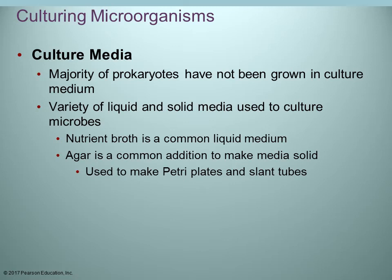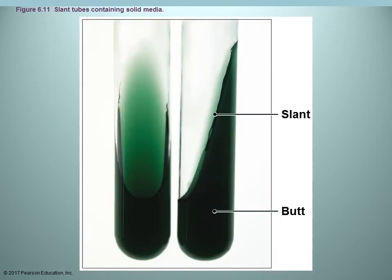You have both liquid and solid media available. Nutrient broth is a very common liquid medium because it contains a little bit of everything, so most organisms should grow in it. Agar is added to medium to make it solid — you can pour it into petri dishes for solid medium or also into tubes. A slant is a test tube where the medium is solidified at an angle. Later we will discuss biochemical tests where you distinguish a reaction in the bottom of the tube — the butt — versus the reaction on the slant.